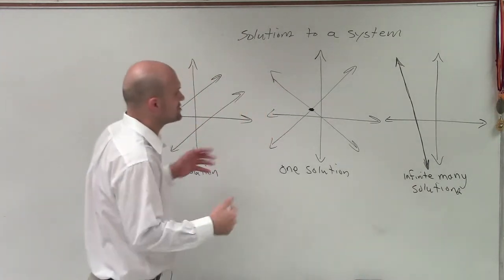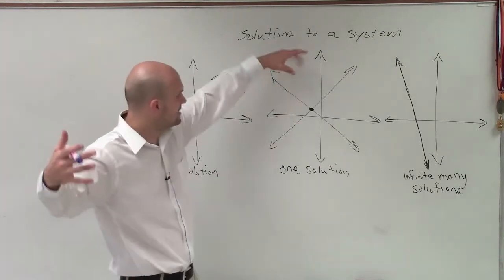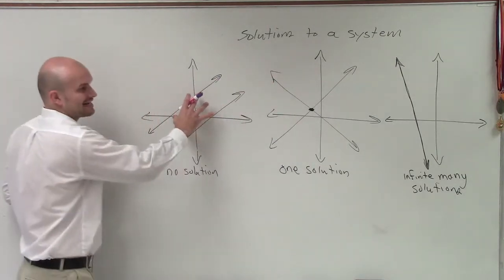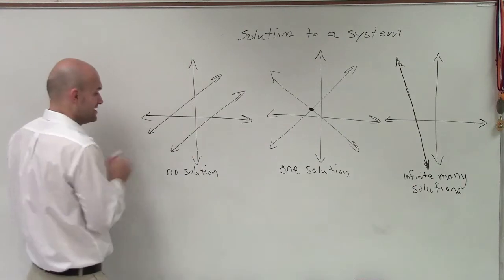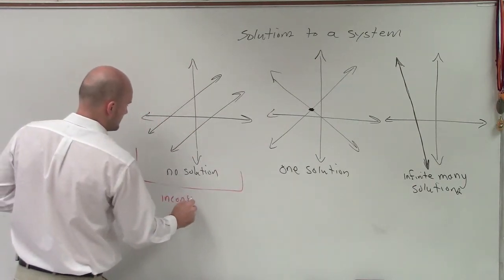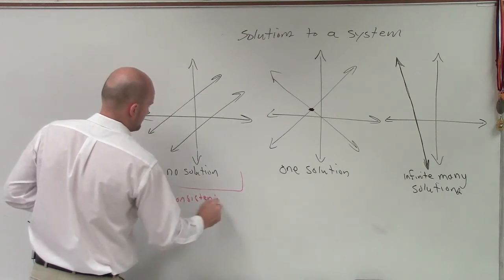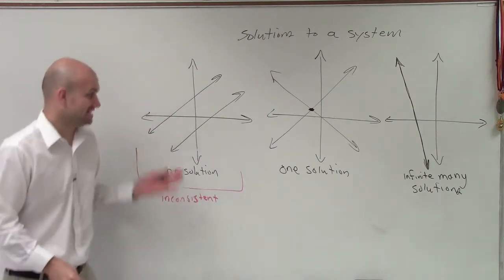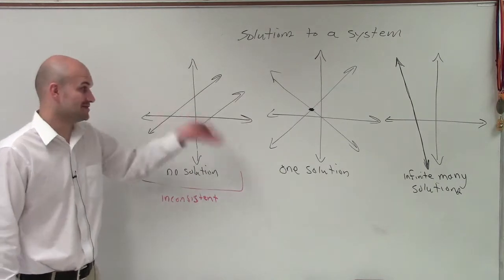So by looking at this, remember our solution is going to be the intersection. So in this case, we don't have any intersections. So these are not going to be consistent. This is what we'll call inconsistent. So if it doesn't have a solution, it's not consistent, it's inconsistent.